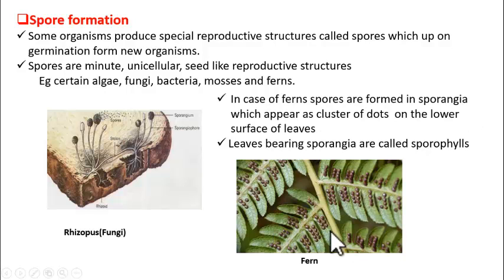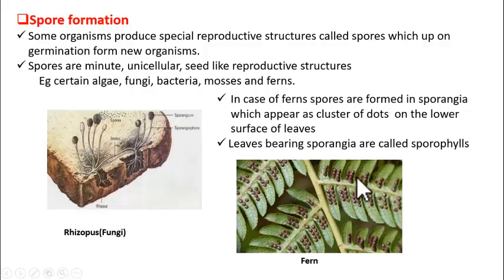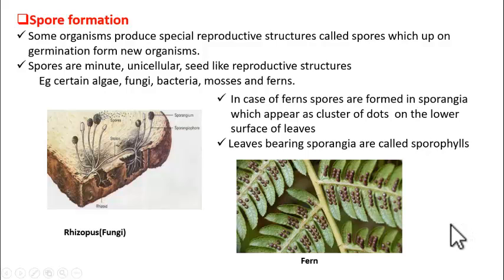Now look at this picture. You find a fern plant. These are the leaves of the plant. On the lower surface of these leaves you find a cluster of dots. These clusters of dots are called sporangia, and each dot of the cluster is called a sporangium — sporangium is singular and sporangia is plural. Each sporangium inside contains hundreds of spores. When the sporangia mature, they break open and release the spores. These spores, when they fall on the soil and conditions are favorable, germinate and produce a new fern plant. This is similar to rhizopus. So this is about reproduction through spore formation.